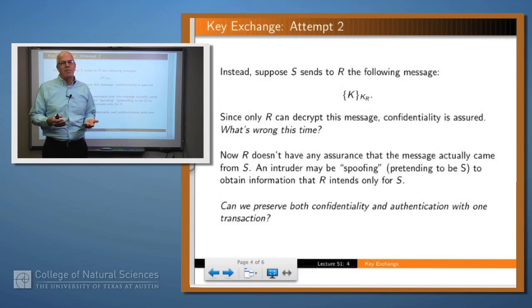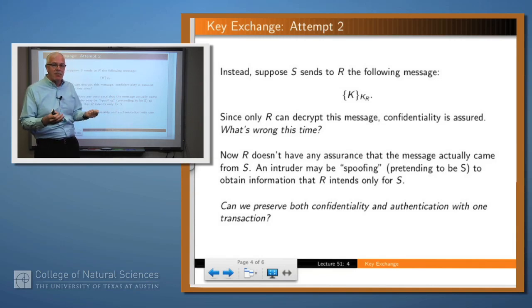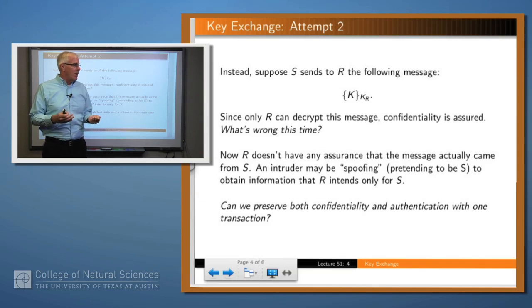Let's try again. Suppose that you encrypt that key with the receiver's public key. Then you know it arrived confidentially, because no one could decrypt that if they didn't have the receiver's private key. The problem is that now we're not sure where it came from because anyone might have the receiver's private key and might have created that message.